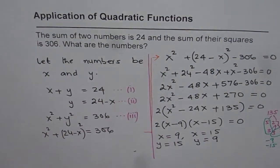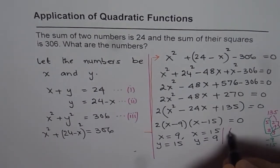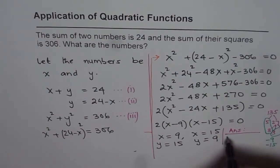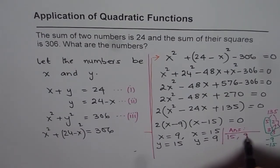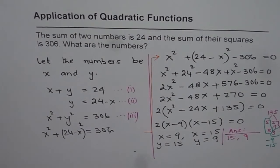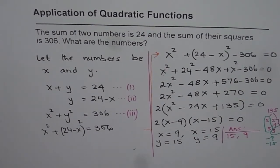And so our answer is, the numbers are 15 and 9. When you add these two numbers you do get 24, and when you add their squares you get 306. So that is how you can solve this question. I hope that is absolutely clear to you. Thank you and all the best.